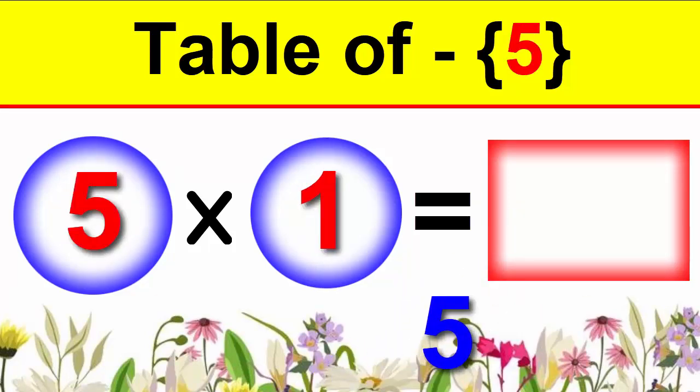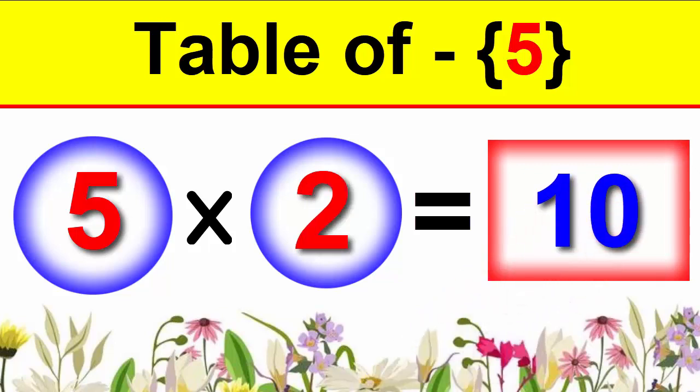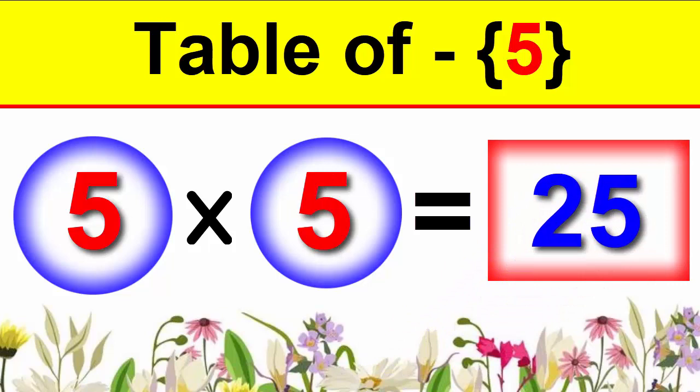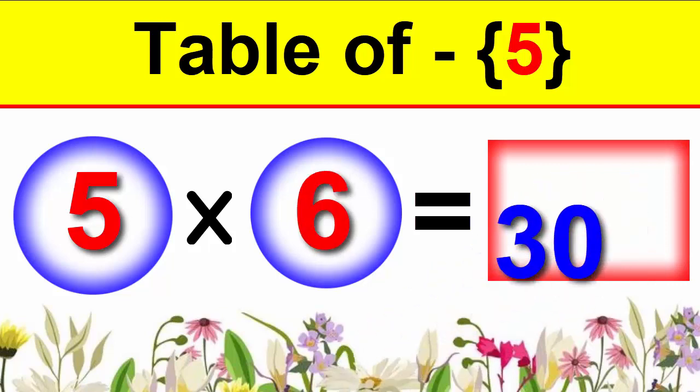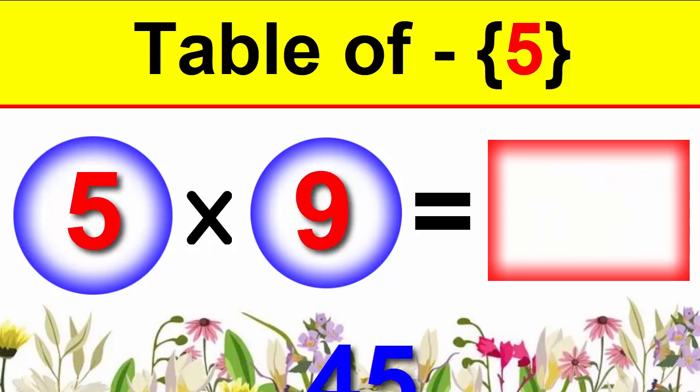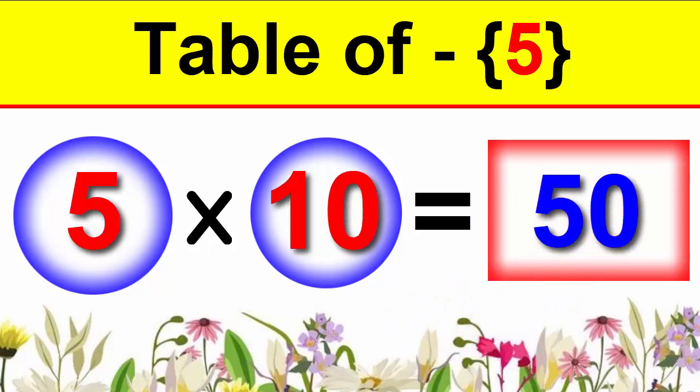5×1 is 5, 5×2 is 10, 5×3 is 15, 5×4 is 20, 5×5 is 25, 5×6 is 30, 5×7 is 35, 5×8 is 40, 5×9 is 45, 5×10 is 50.